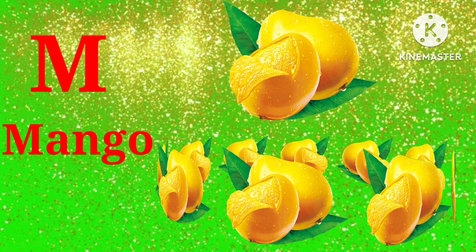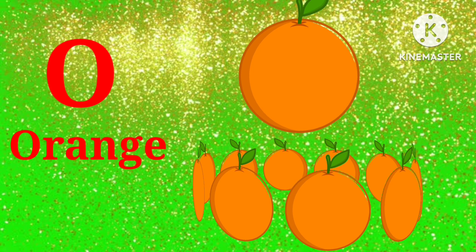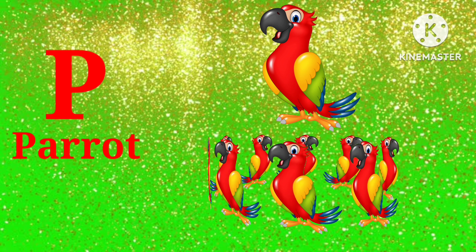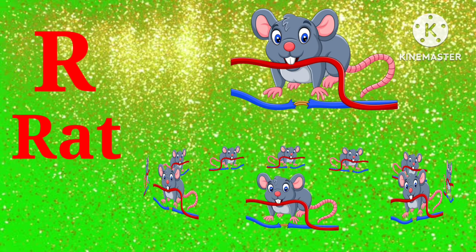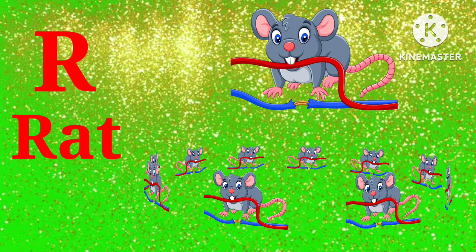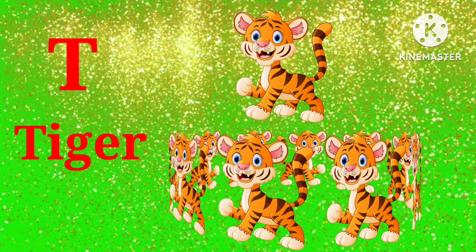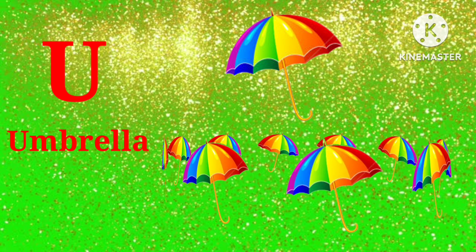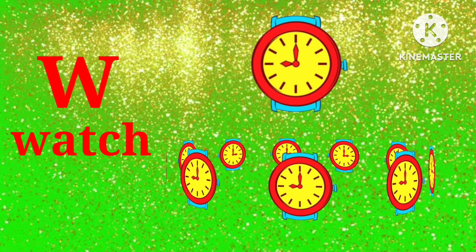M for mango, N for nest, O for orange, P for parrot, Q for queen, R for red, S for sheep, T for tiger, U for umbrella, V for band, W for watch.